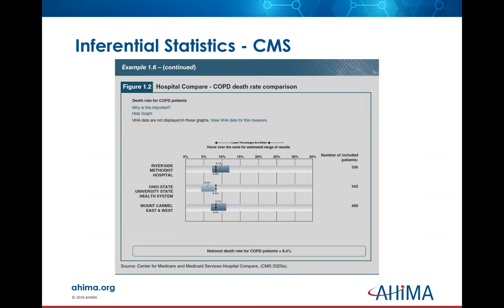Here's an example of inferential statistics from CMS. We're comparing hospitals on the death rate for chronic obstructive pulmonary disease (COPD). Lower percentages mean fewer patients dying from COPD. Looking at the dotted line, we would infer that Mount Carmel is ahead of Ohio State and Riverside — lower numbers, since we're talking about deaths, is better.